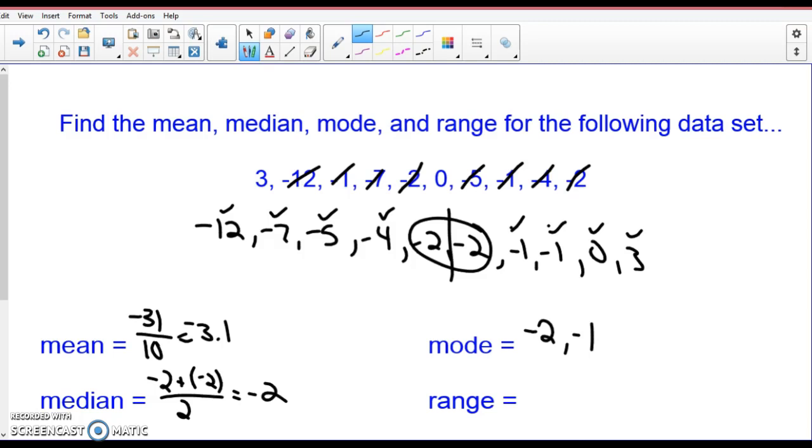Range. High minus low. Highest is 3. Lowest is minus 12. High minus low.